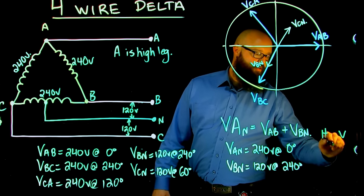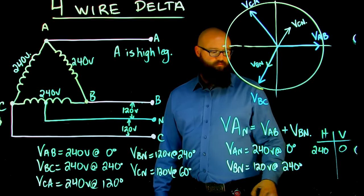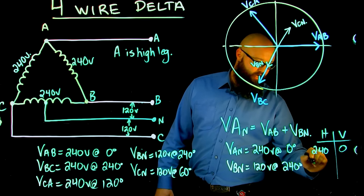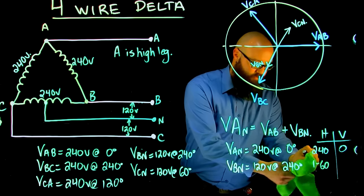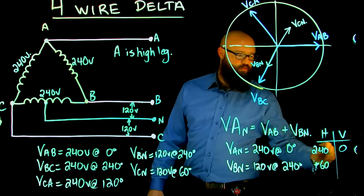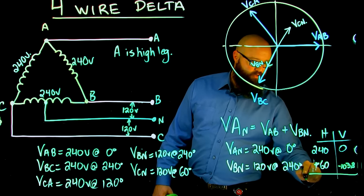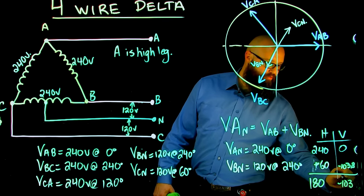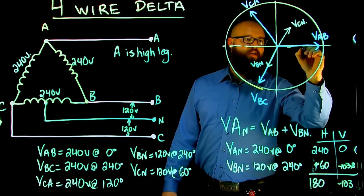We can break this up into a horizontal vertical chart. I end up with 240 volts here, 0 volts here. I have 120 times the cos of 240 is, should be, negative 60, and 120 times the sin of 240 should be negative 103.8, somewhere around there. Add these up, we should see 180 right here and negative 103, which puts us 180 over this way and negative 103 down this way.